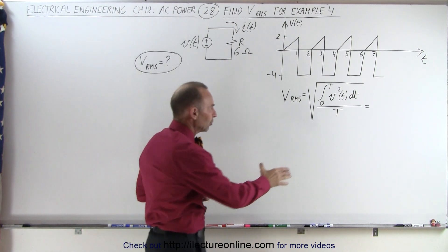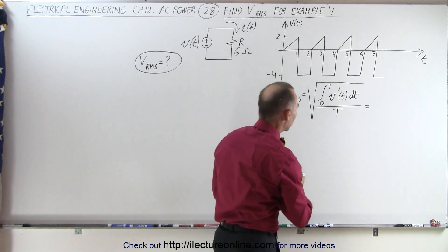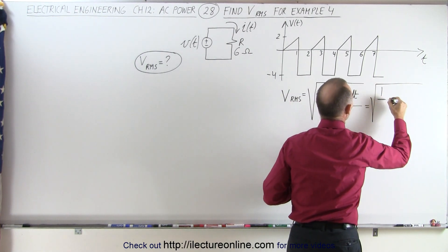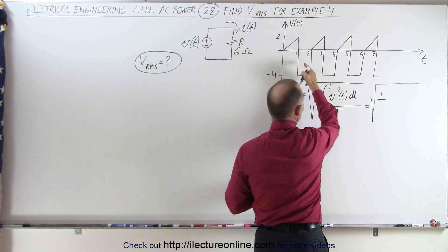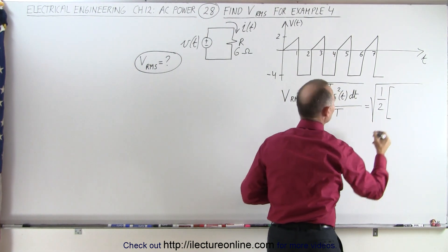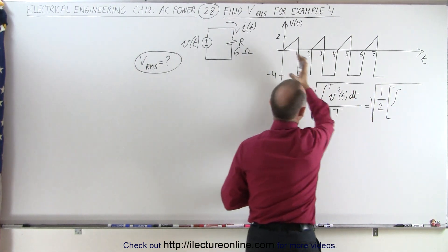So our general equation, which is described here, is now going to become the following. It's going to be equal to the square root of 1 over the period. In this case the period goes from 0 to 2, so 1 over 2 multiplied times the integral of the two portions.